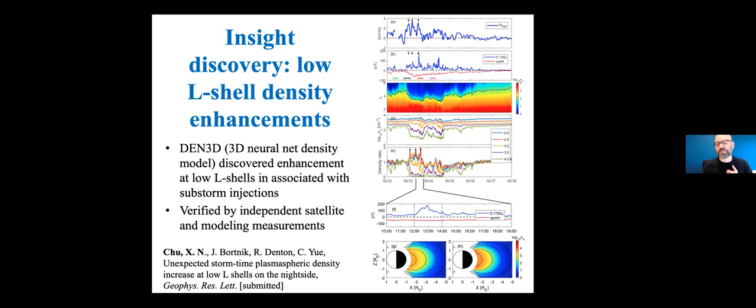So this is the density as a function of L-shell and time. And as the storm proceeds, this is DST. We expect an erosion of the outer plasma sphere. This is expected. It's in all the models and a slower recovery later on. But look at this stuff. There are some enhancements here at the lower L-shells. And when I was looking at this with Xiangning, we thought this was probably an error, some kind of an overfitting thing, but we decided to look further into it.